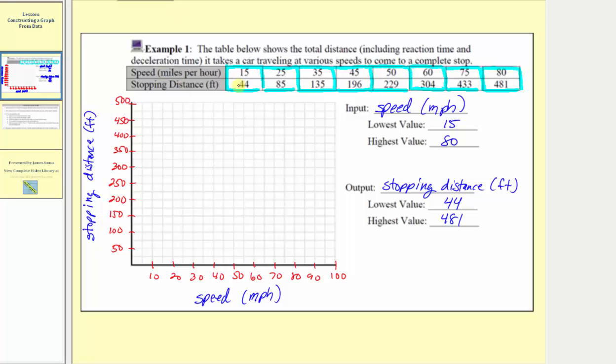So the first ordered pair is 15 comma 44. From the origin we move right to 15 and then up to 44, which would be approximately here. Next we have 25 comma 85, so right to 25, up to 85, which is approximately here.